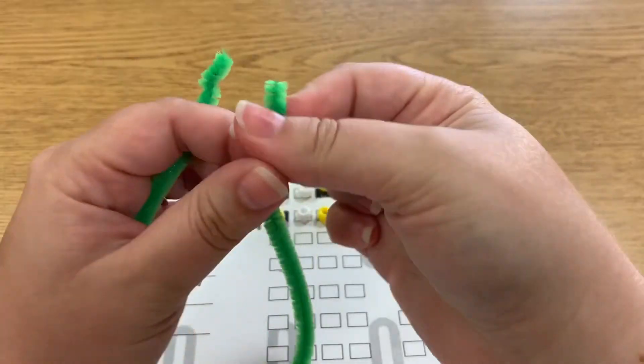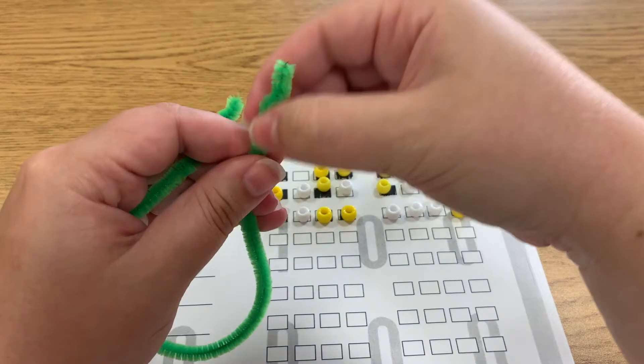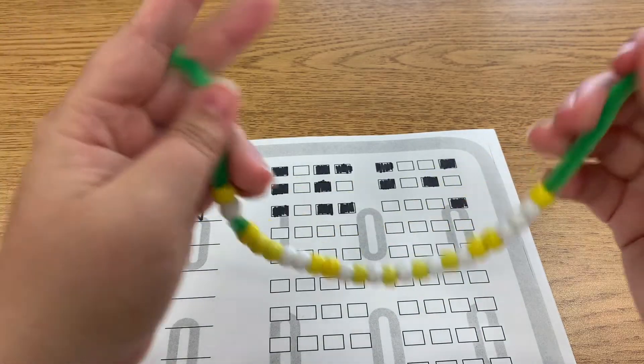Now that the beads are all organized, I am going to place them on this pipe cleaner to form a bracelet. Be sure to place them on carefully, and don't forget to hold one of the ends so you don't lose your beads.